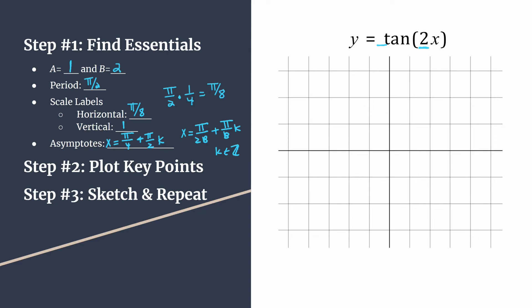Let's go ahead and label. Starting with our horizontal axis, counting by pi over 8: 1 pi over 8, 2 pi over 8 which reduces to pi over 4, 3 pi over 8, 4 pi over 8 which reduces to pi over 2. That checks out — our second tick mark is our first positive asymptote and our fourth tick mark equals our period. In the negative direction: negative pi over 8, negative pi over 4, negative 3 pi over 8, and negative pi over 2.